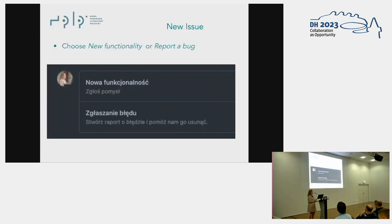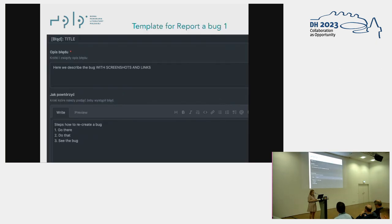I'd like to show you our templates, because we are using two. The first one is 'Report a Bug.' GitHub also allows you to create a third one — 'Report a Vulnerability' for cybersecurity reasons — but we are not using that in our projects. For the bug template, first we need to give it a title, and there is a bug label with the title which we can remove if we want. The first field is obligatory: we should describe the bug with screenshots and links.